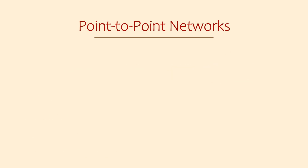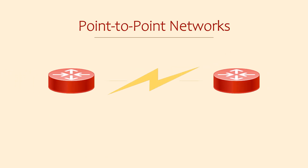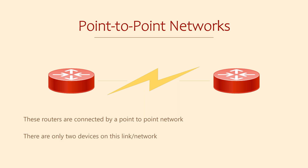Point-to-point is the simplest one to understand. One router directly connects to another. This is more common with a WAN connection, that is, a connection from one site to another. When one router sends a message, there's only one other router that could possibly receive it. This is a nice and uncomplicated model. On the downside, we can't add more routers to the network — we can only create more networks and add routers there.